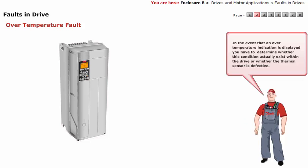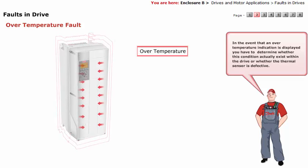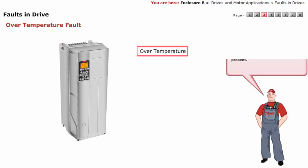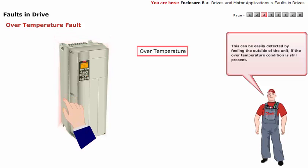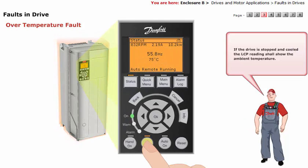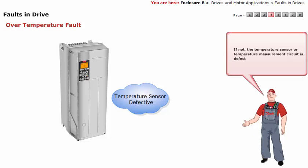In the event that an over temperature indication is displayed, you have to determine whether this condition actually exists within the drive or whether the thermal sensor is defective. This can be easily detected by feeling the outside of the unit if the over temperature condition is still present. If the drive is stopped and cooled, the LCP reading shall show the ambient temperature. If not, the temperature sensor or temperature measurement circuit is defective.